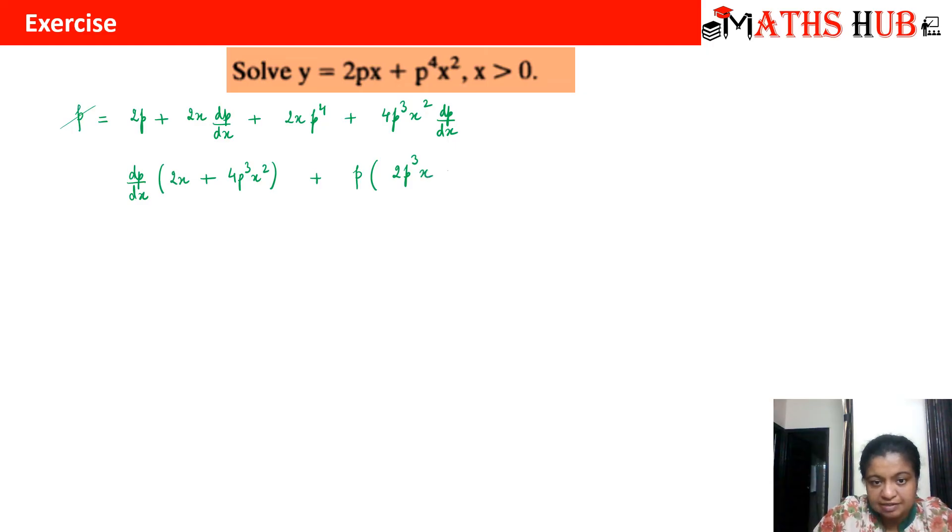Equal to 0. So I can take out 2x also common from here. When I take out 2x common from here I will be left with 1 here. And when I take out 2x common from here I will get 2 and I will get here 1 plus 2p cube x.